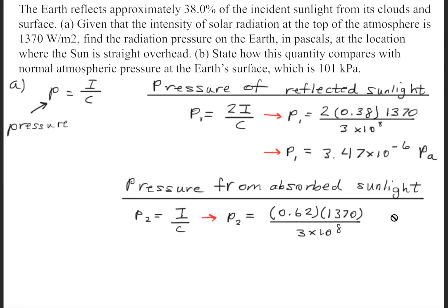So we'll get that the pressure is equal to 0.62 times 1370 divided by 3 times 10 to the 8th meters per second. This will give us a pressure of 2.83 times 10 to the minus 6 pascals.